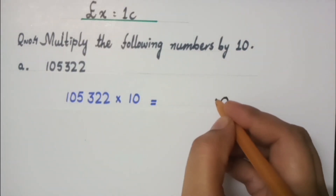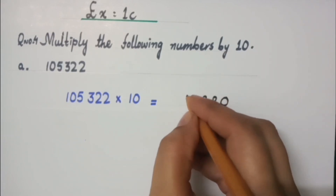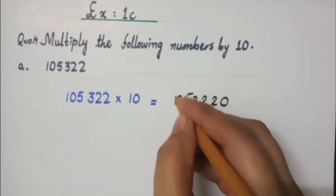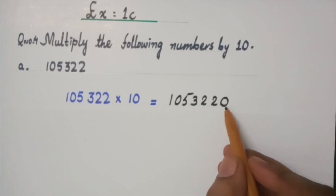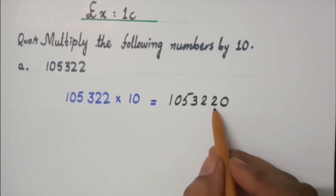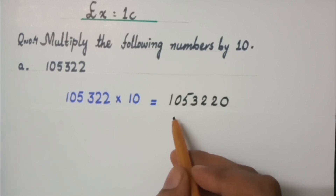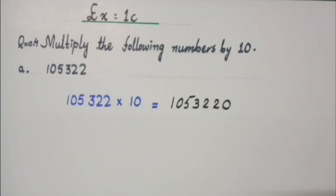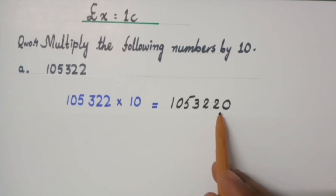10 has one zero. So let's first put 0 to the right, and then the number to the left. Let's start writing the number from the left: 1, 0, 5, 3, 2, 2. What did we do? We put 0 to the right and then the number to the left. Is it according to the rule? So now it becomes 1,053,220. Is it easy now?